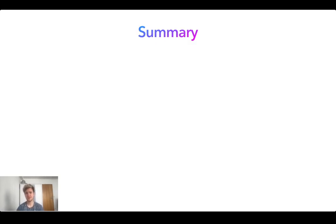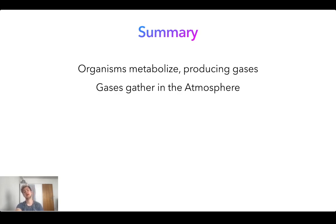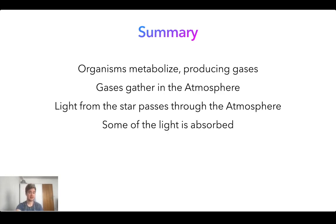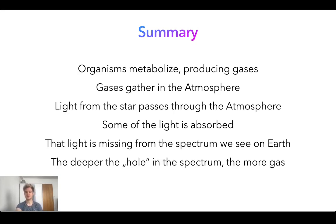That was a lot of information in a really short amount of time, so what I'll do is briefly summarize what we learned today. So we've learned that organisms metabolize, and when they do that, they produce gases. These gases can then gather in the atmosphere of an exoplanet, and light from the star that the exoplanet is going around passes through the atmosphere on its way to us on Earth. Some of that light is absorbed in the atmosphere by methane being present, for example, and that light will then be missing from the spectrum that we can see with our telescope on Earth. The deeper the hole in that spectrum is, the more gas there is present on the exoplanet, and more gas usually means that there is more life.